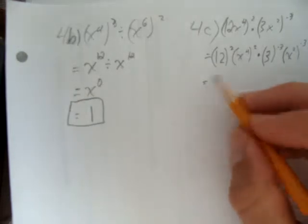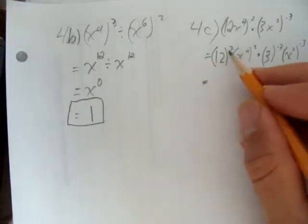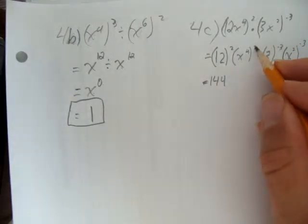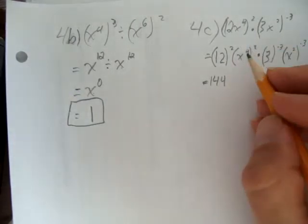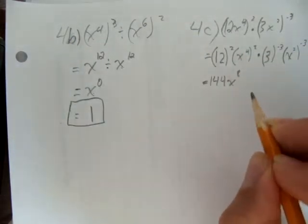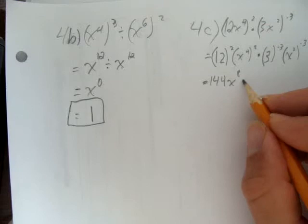Okay, one piece at a time, let's keep going. 12 squared, 12 times 12, 144 times x to the power of 4 to the power of 2, just like in the previous question when I have a power on a power I multiply the exponents, I get 144x to the power of 8.